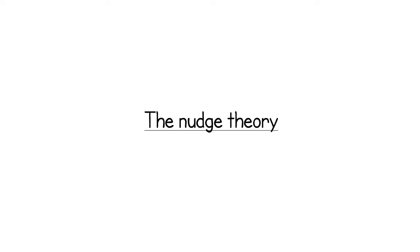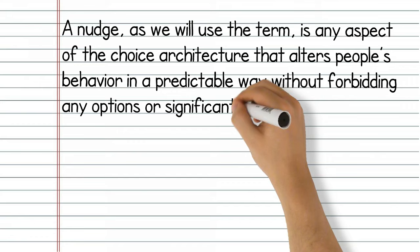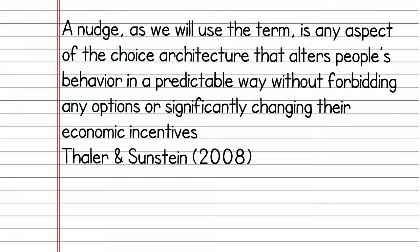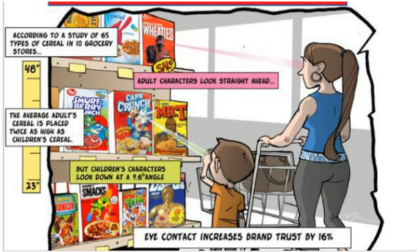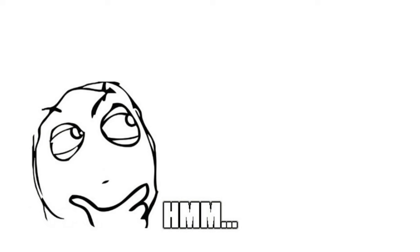The nudge theory. Ever walked in a shop and came out with things you never intended to buy? A nudge is any aspect of the choice architecture that alters people's behaviour in a predictable way without forbidding any options or significantly changing the economic incentives. When you walk into a supermarket and your children scream for their favourite cereal because the characters on the front of the box are at your child's eye level, that's the nudge theory. When you've spent 30 minutes rushing around the supermarket hungry and exhausted, waiting at the checkout with promotional chocolate displayed right in front of your eyes, that's the nudge theory.